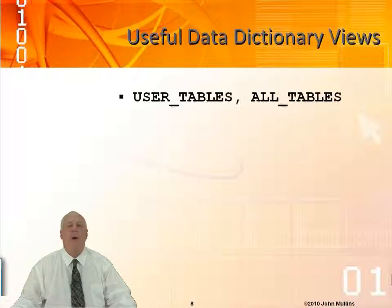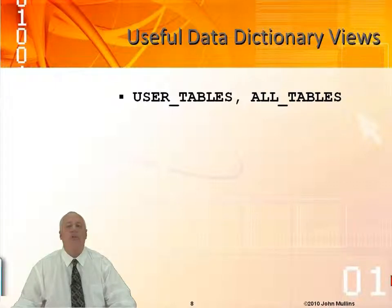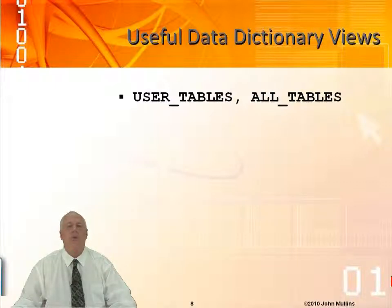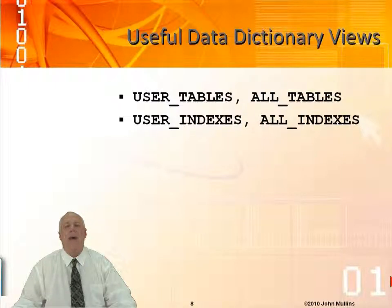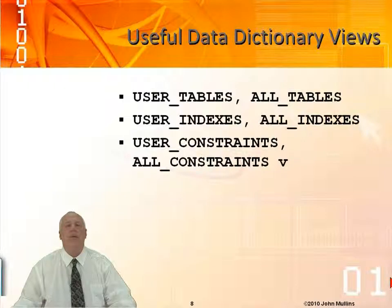Some useful views to take advantage of: user_tables and all_tables give you information about tables in your database at a high level — table names, where the table is located, statistical information like number of rows, and for all_tables, who owns the table. You also have user_indexes or all_indexes to give information about indexes and how they might help speed up retrieval. Then there's information about constraints — user_constraints, all_constraints — covering primary keys, foreign keys, and those types of constraints.